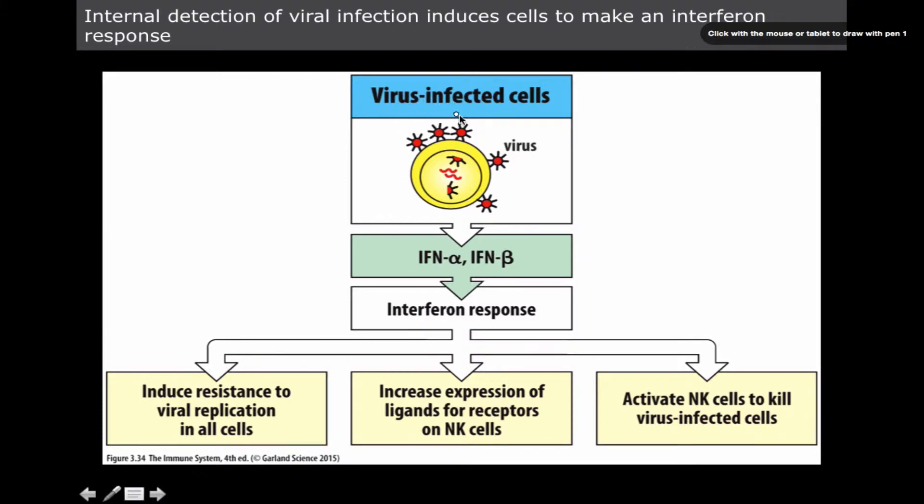So now we're going to switch gears and talk about how the innate immune system responds to viral infections. This is just a diagram that outlines all the things we're going to talk about. A virally infected cell, this could be any cell of your body, any somatic cell.